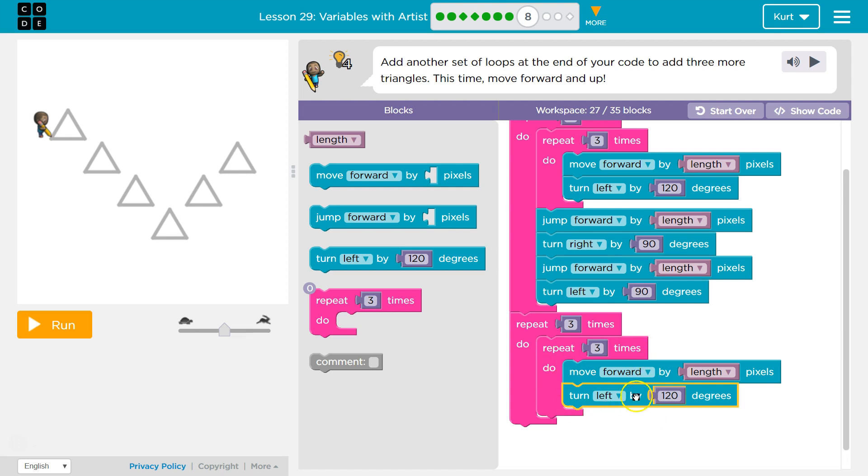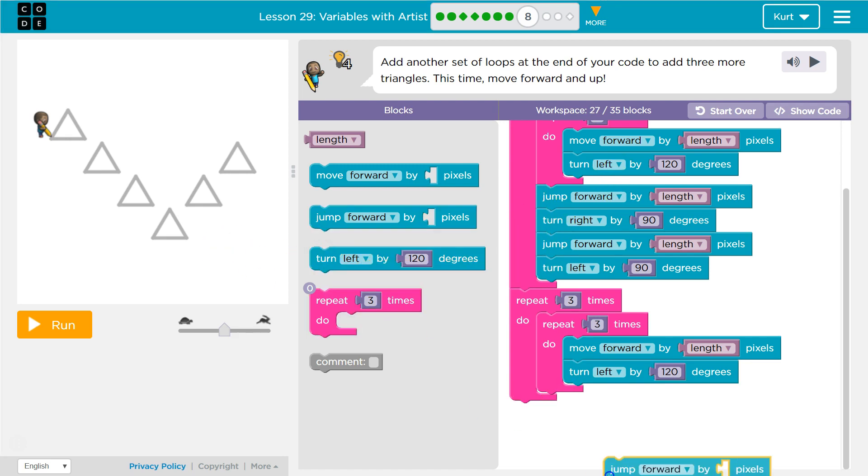And then after that, after I do that three times, it will run through three times, I'll draw a triangle, then it's going to run the code below it. So just like up here, I think I'm going to jump forward by length, which is 50.